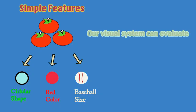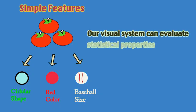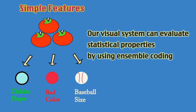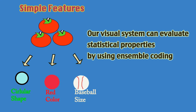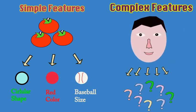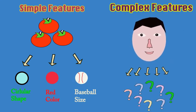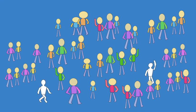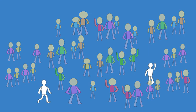By using ensemble coding, our visual system can evaluate the statistical properties of simple features like shape, color, and size, and also process more complex objects, such as faces. This allows us to evaluate our visual surroundings quickly and accurately.